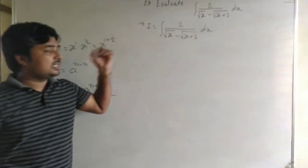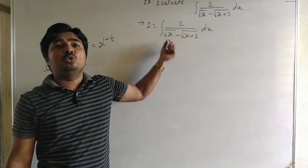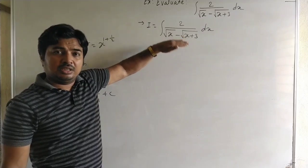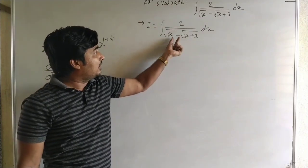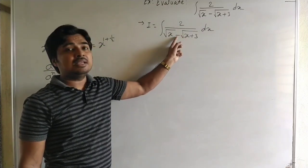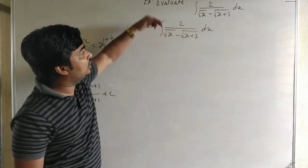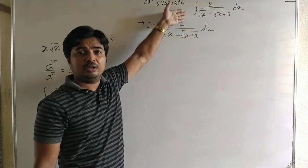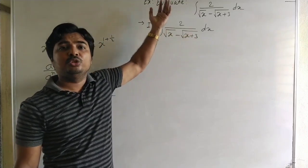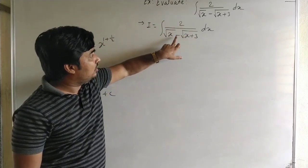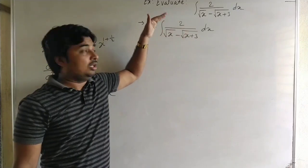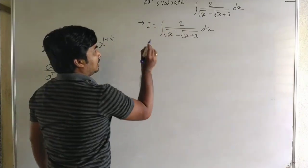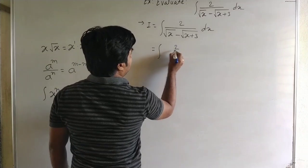See carefully. In the previous example, in the denominator there are two terms — x into under root x — but both are in multiplication, so we can write the denominator term in the numerator. But here there are two terms with a minus. When it is a minus or plus, you cannot take under root x or under root x plus 3 into the numerator individually.